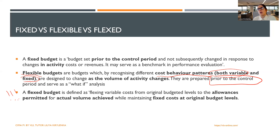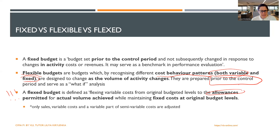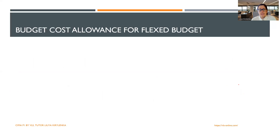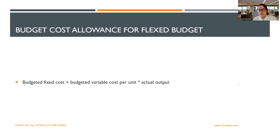A fixed budget is beneficial in that it is a fixed target that never changes, making it easier for managers to focus on. They may be demotivated if the target keeps changing as expected output changes. The key term here is 'allowances permitted.' The budget allowance for a flexed budget is: budgeted fixed cost plus budgeted variable cost multiplied by actual output. So the fixed part does not change, and the variable part changes in line with actual output.